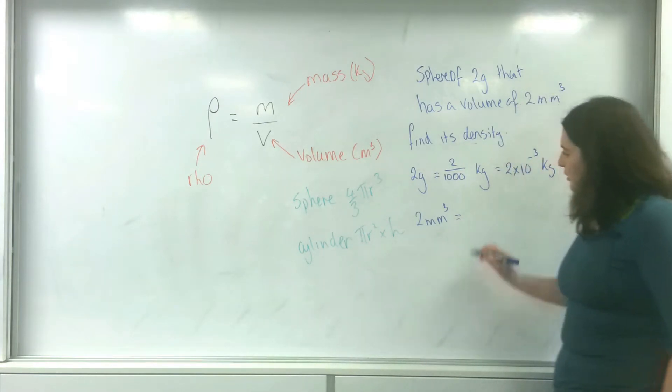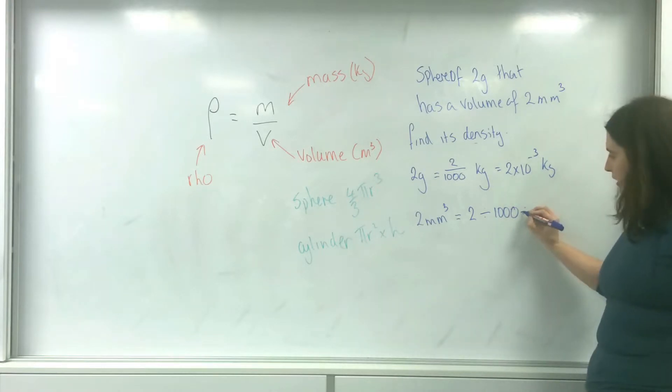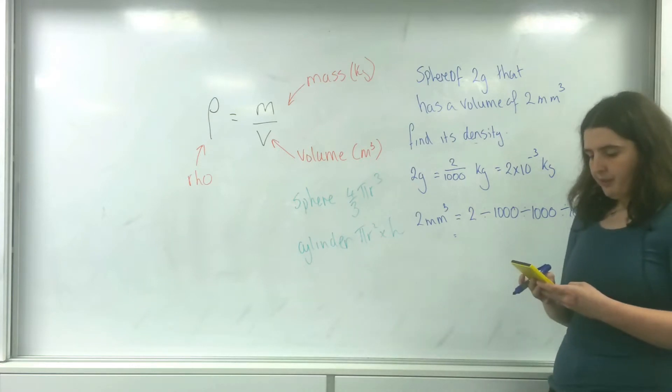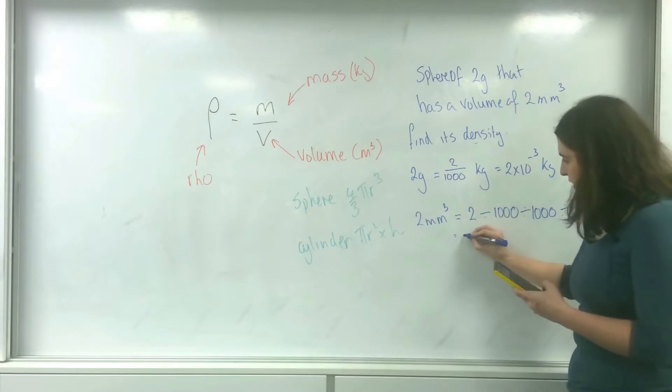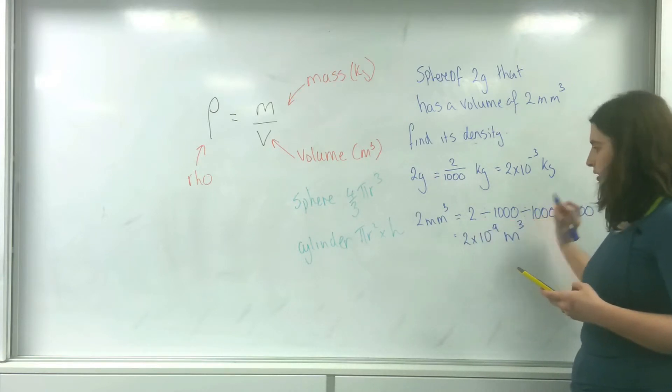So to convert it, not only do I have to divide it once by 1,000, I have to divide it twice by 1,000, and in fact, 3 times by 1,000. So 2 divided by 1,000, divided by 1,000, divided by 1,000, is 2 times 10 to the minus 9 meters cubed.